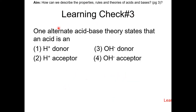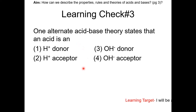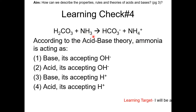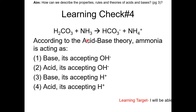One limitation of the Brønsted-Lowry theory is that it cannot identify the acid or base if it does not have a hydrogen. Learning check number three: one alternative acid-base theory states that an acid is a what? The answer is choice 1 — H⁺ donor. Learning check number four: according to the acid-base theory, ammonium is acting as a what? Ammonium is NH3, and in this equation it takes a hydrogen ion from H2CO3. Therefore, it is a base. The answer is choice 3.